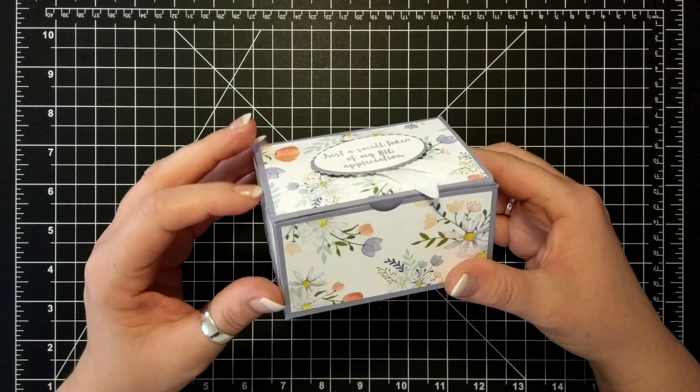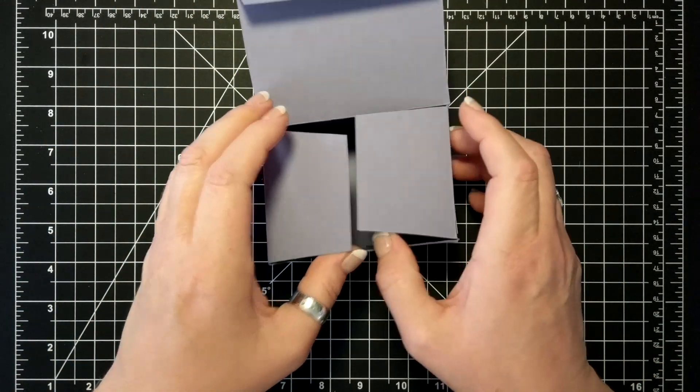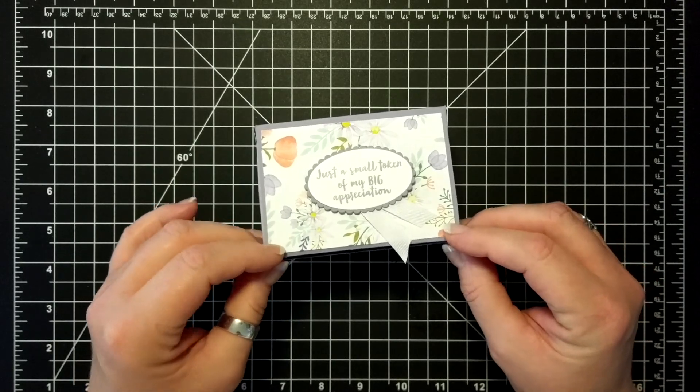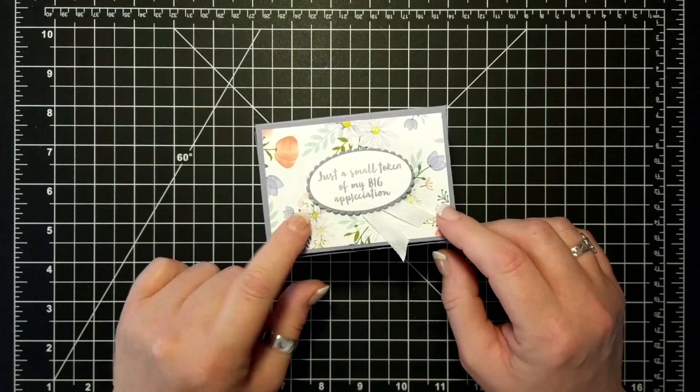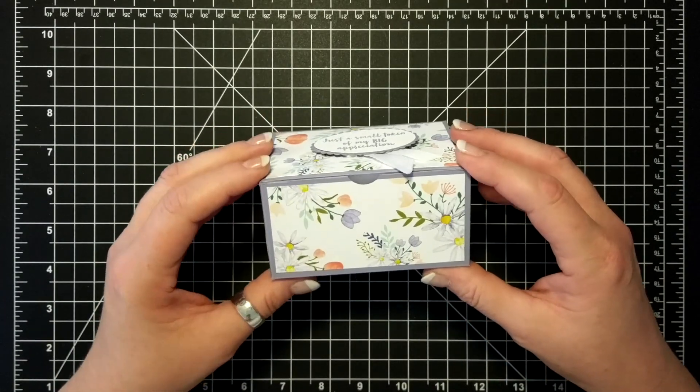Look at this box that I have just created. It's like that. So cute. This is the Delightful Daisy paper. I love it. It's so delightful.